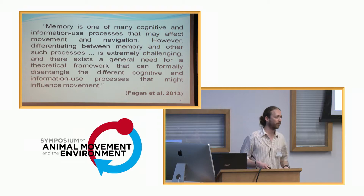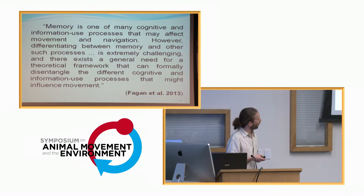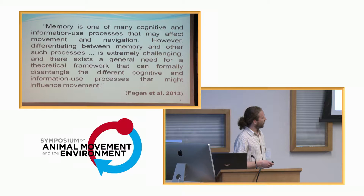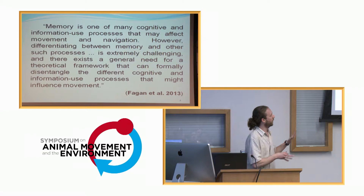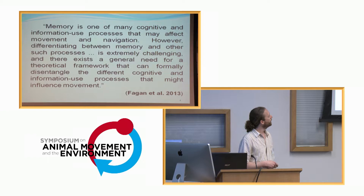From a recent review by Bill Fagan at Ecology Letters on animal movement and memory: 'Memory is one of many cognitive and information-use processes that might affect movement and navigation. However, differentiating between memory and other such processes is extremely challenging. There exists a general need for a theoretical framework that can formally disentangle the different cognitive information processes that might influence movement.' What I'm presenting today is not a general framework, but an attempt to approach some of these problems.